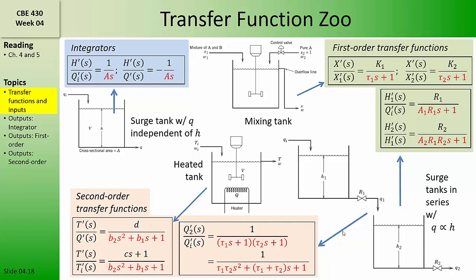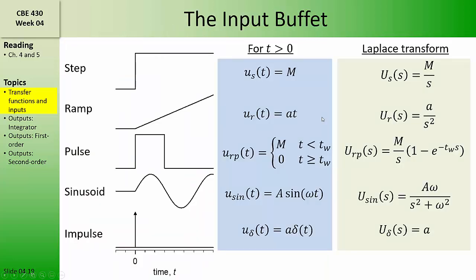These are the types of animals that we have in our transfer function zoo. In chapter 5, we're going to feed these transfer functions five different types of inputs: a step input, a ramp input, a pulse input, a sinusoidal input, and an impulse input. These five different types of inputs represent important idealized features of real signals in chemical and biological processes.